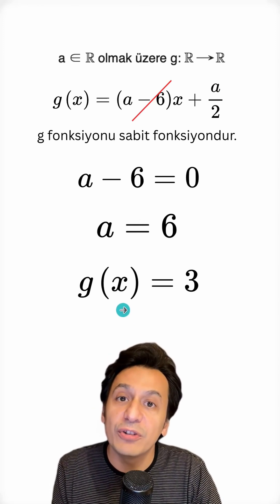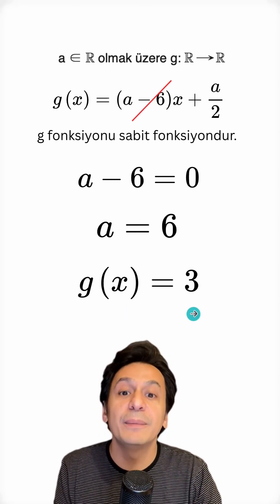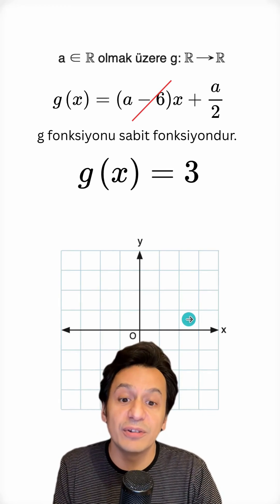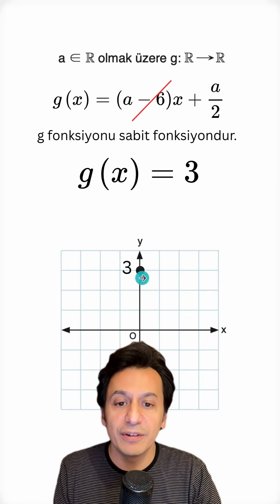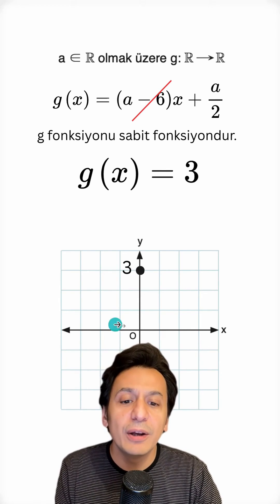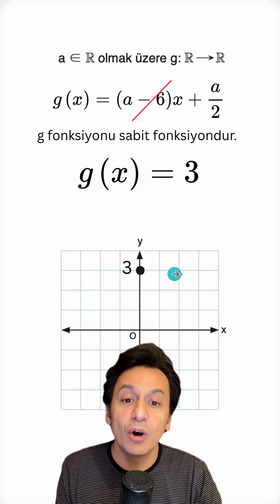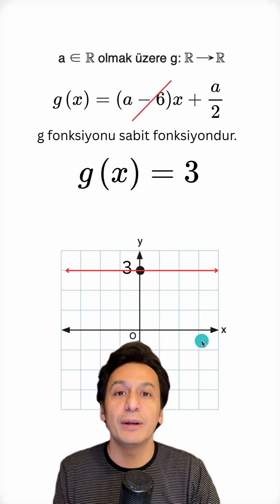No matter what you substitute for X, it will always give you the number 3. We can go ahead and show this on the graph. On my graph, I mark the point here as 3. No matter what value I give, the value of my function here should always be 3. And so, I draw my graph accordingly.